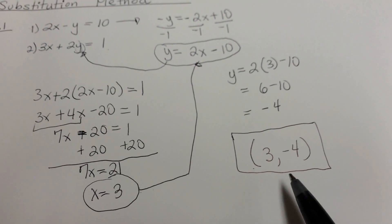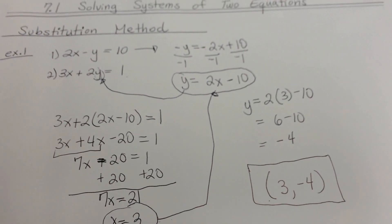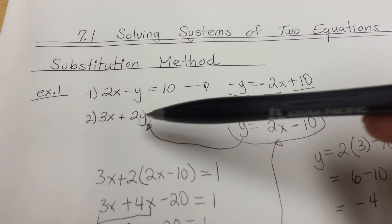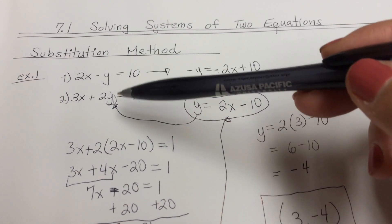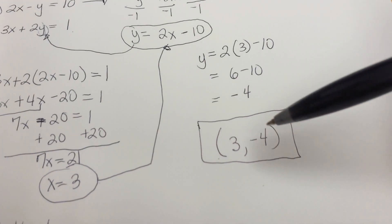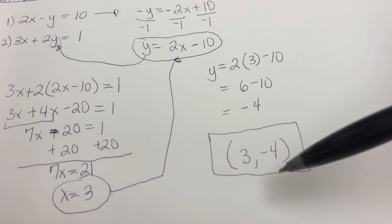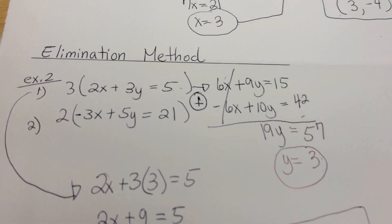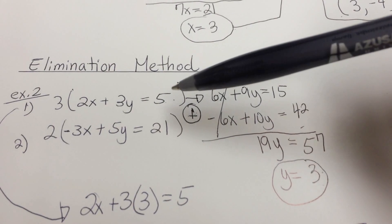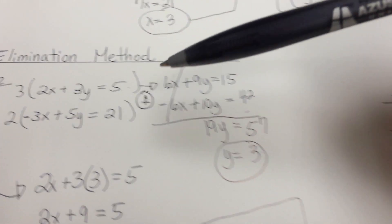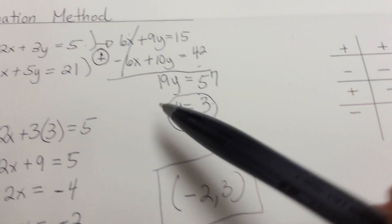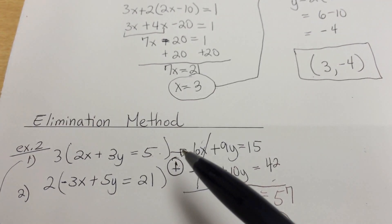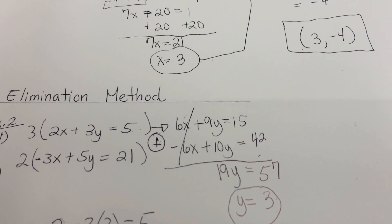Going back to the previous methods, those answers were also written in parentheses. If you want to verify your work from substitution or elimination, take both equations, set them equal to y, graph them out, and find where they intersect. For the substitution example, the graphs should cross at (3, negative 4); for the elimination example, at (negative 2, 3). That's a useful checking method.